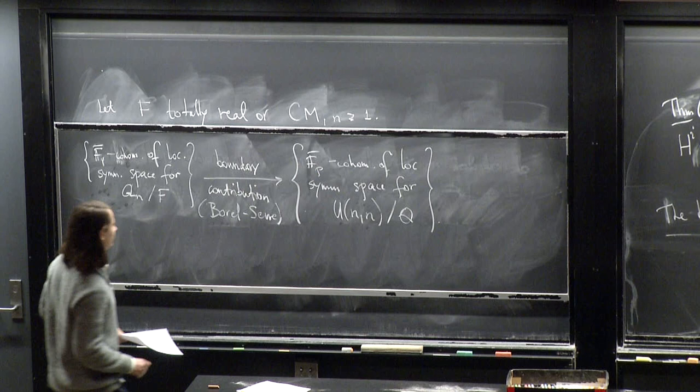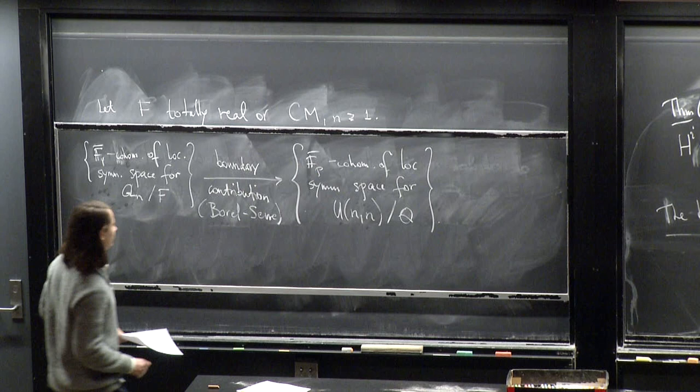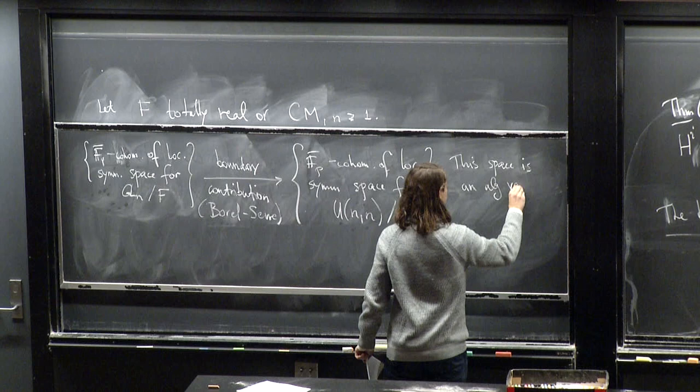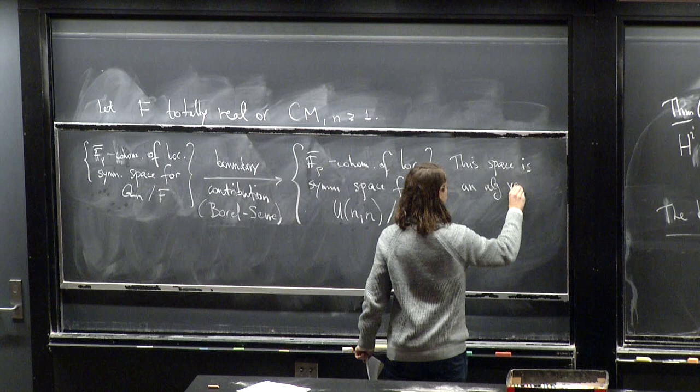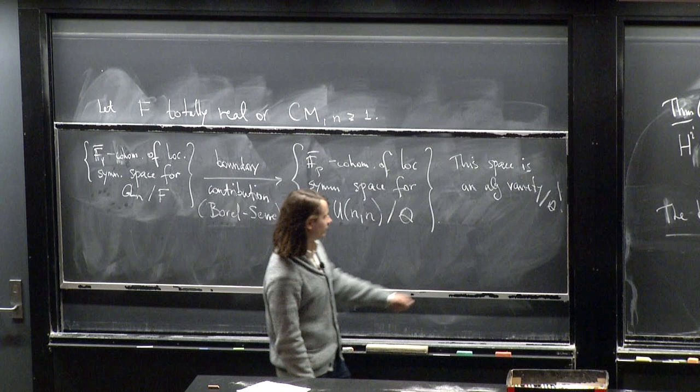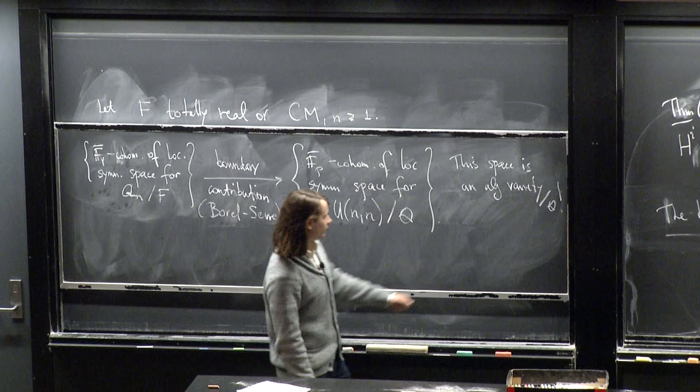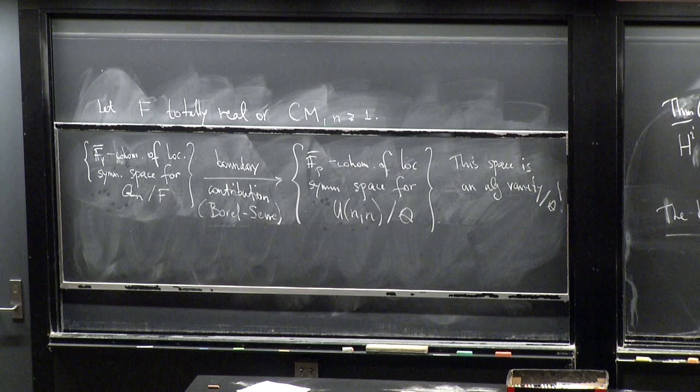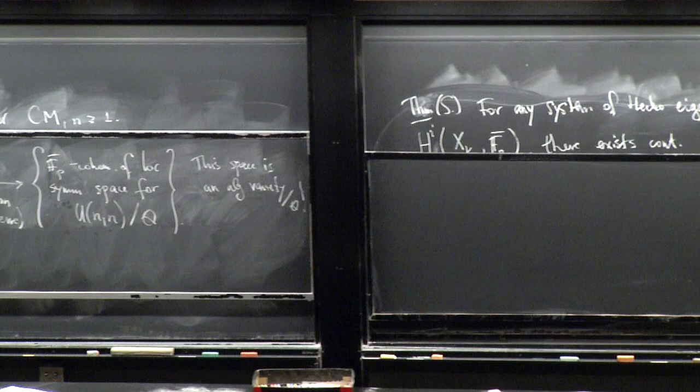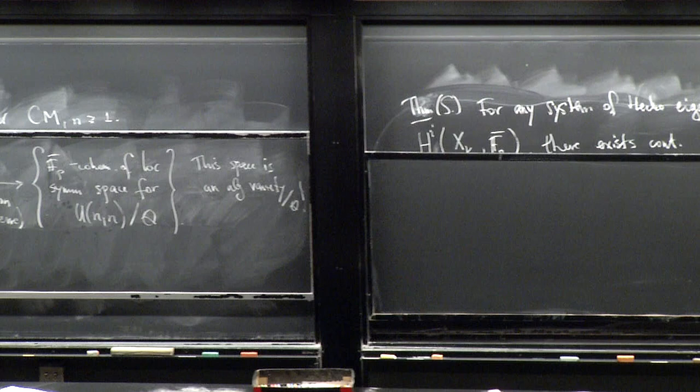So the point here is that this space is an algebraic variety over Q. You might think that's great because now you could try to look at its étale cohomology and find a Galois representation there. But unfortunately, the Galois representation that you see there is completely uninteresting. It's just some character. In the actual argument, it will play no role that this is defined over Q. I will only use this over Q bar.